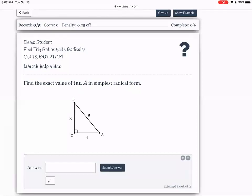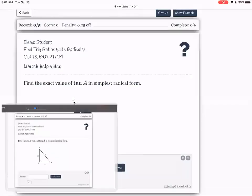Alright, so for the first section, we are going to do find trig ratios with radicals. So for this question, we have to find the exact value of tangent of A in simplest radical form. So let me screenshot this thing, if I can write on it.